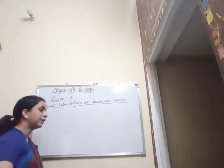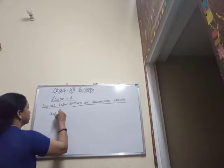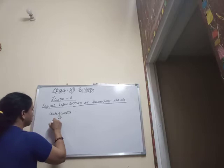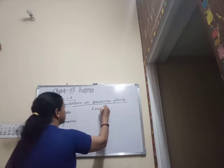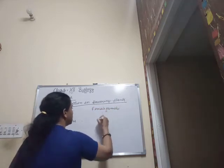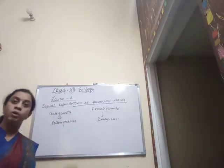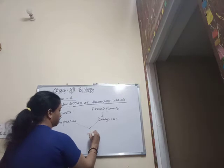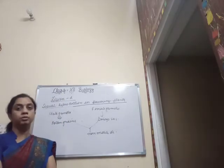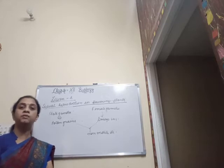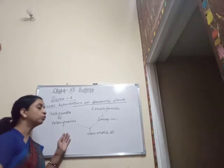As we all know, the male gametes are borne in the pollen grains, and the female gametes are present in the embryo sac. So both of these are non-motile structures, and they need to come close to each other for the fertilization event to take place.